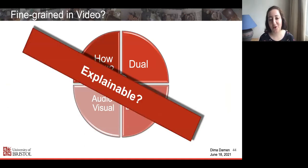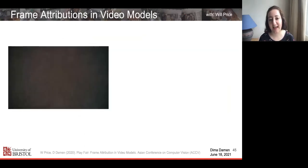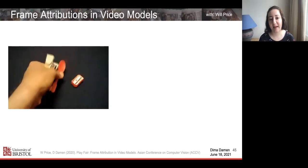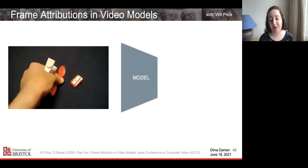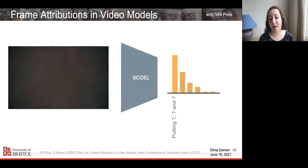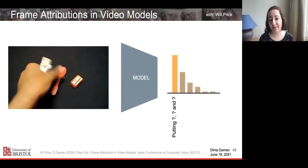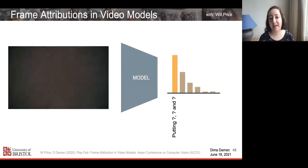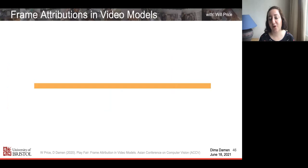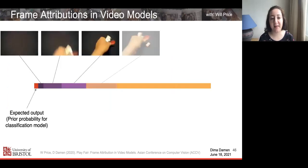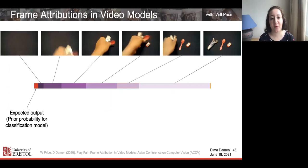Before time finishes, I want to show you work we presented last year at ACCV about explainability of videos. Given a video passed to a model, you can predict how likely it is of a particular class. But this work looks at the response of the model to this video and breaks it into the prior probability of the class and then the contribution of every individual frame to know which frame is most influential in making that decision.